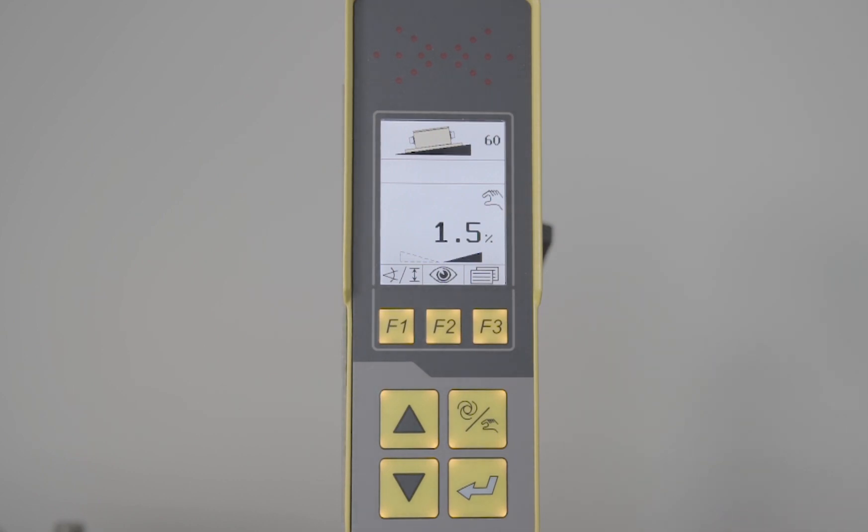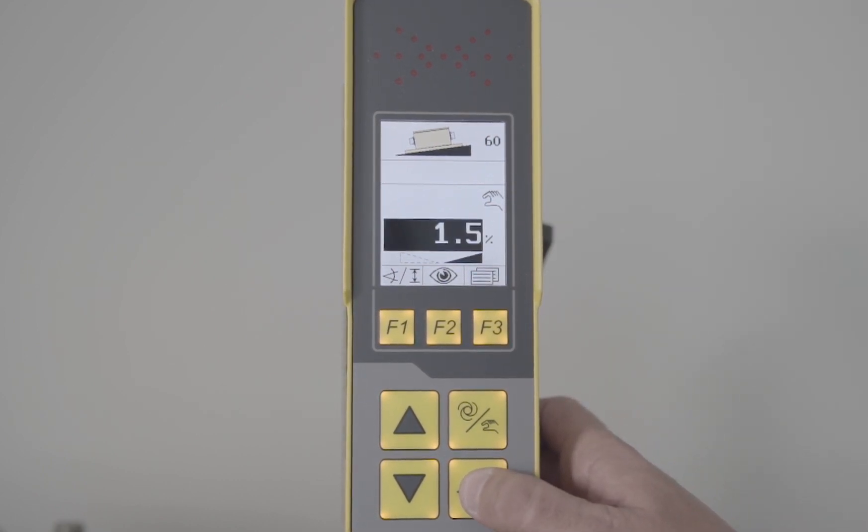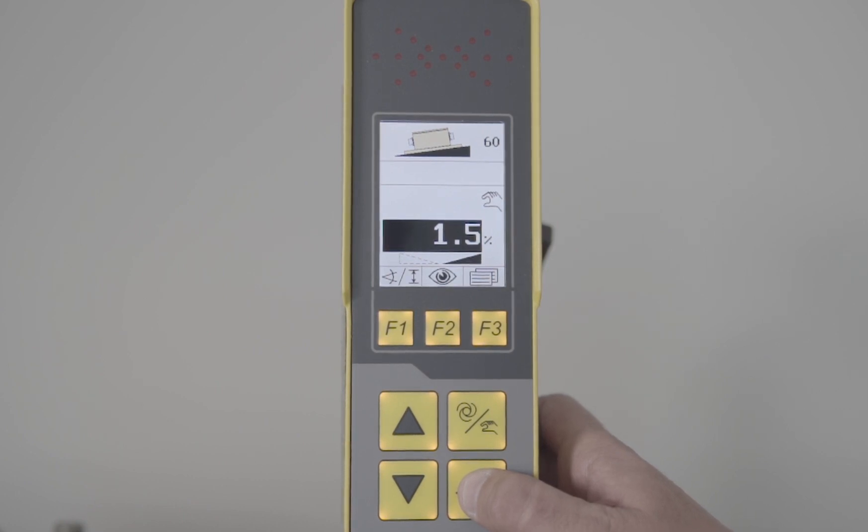To calibrate the slope sensor in manual mode, you press and hold down the set key. You'll see the number 1.5% illuminate in black. Just hold it there for a few seconds and let go.